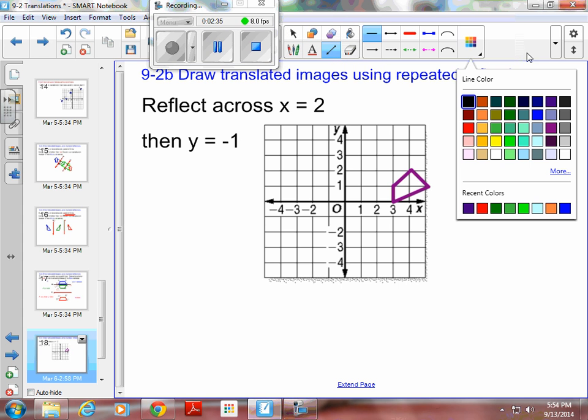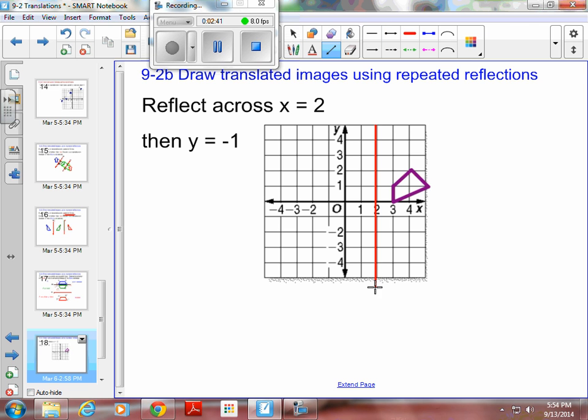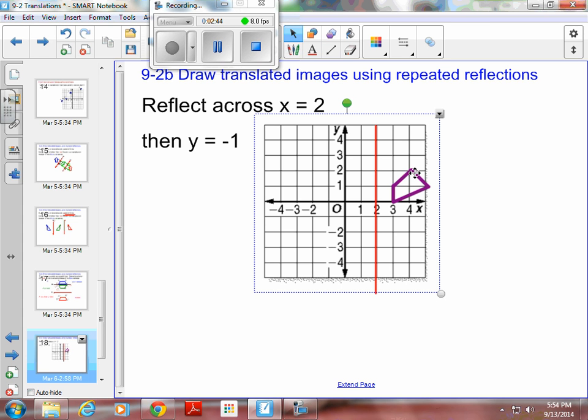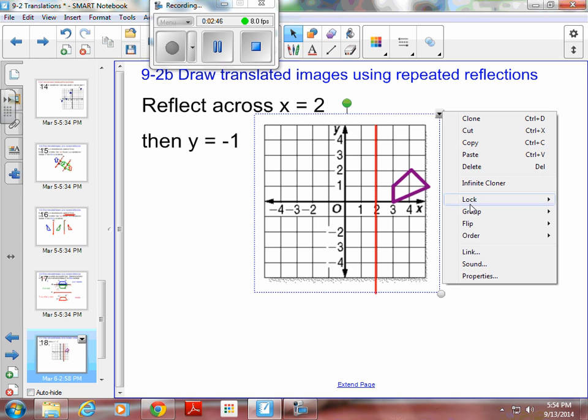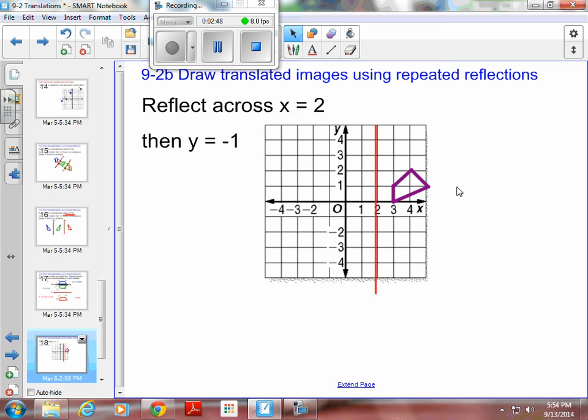So grab a line. Let's make them red. So X equals 2 is this line right here. And I want to reflect this shape. And it looks like I have grouped it all together. So let's hold on a second. Okay.